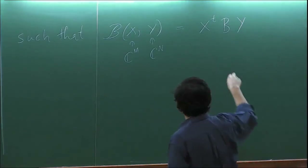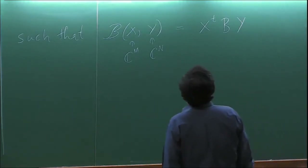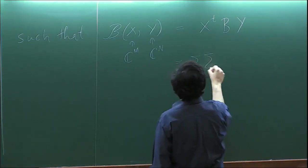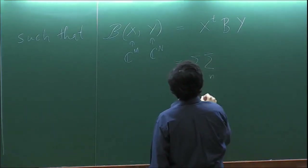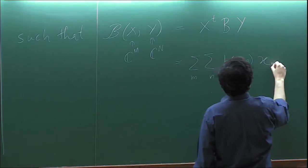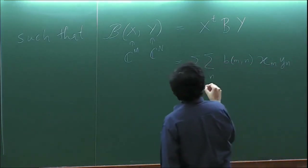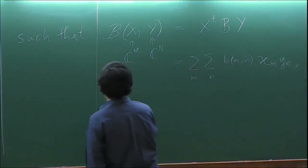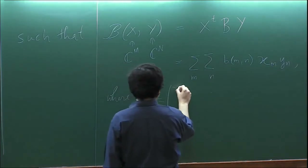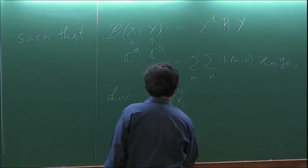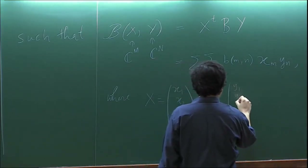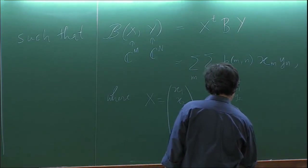If you expand it, it becomes a double sum over M and N, where X is the column vector (X_1, X_2, ..., X_M) and Y is the column vector (Y_1, Y_2, ..., Y_N).